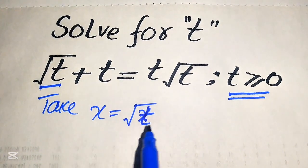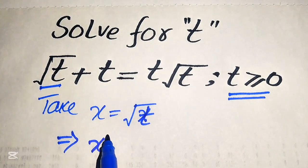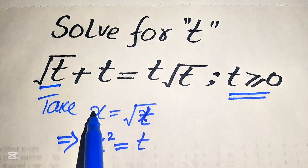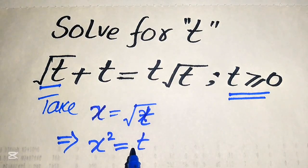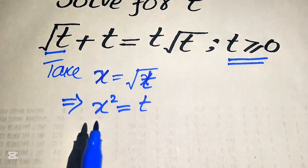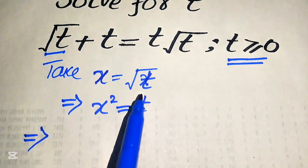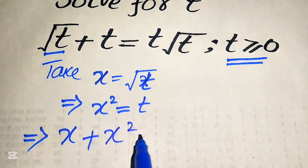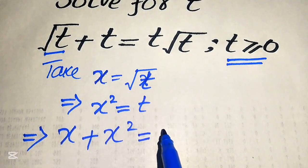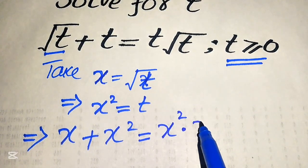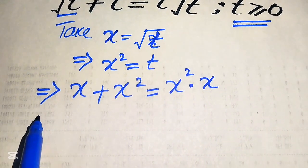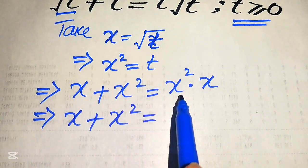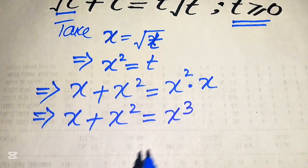To find the value of t, we square both sides, giving us x squared equals t. Now we substitute these two values into the given equation. Square root of t equals x, t equals x squared, and t times square root of t equals x squared times x. After simplification, x plus x squared equals x squared times x, which equals x cubed.